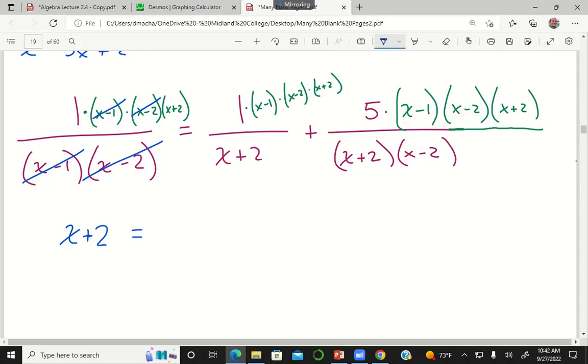The first term on the right-hand side has an x plus 2 in the numerator that will cancel with the x plus 2 in the denominator. And so the first term on the right-hand side now becomes x minus 1 times x minus 2. And then for the second term on the right-hand side x minus 2 in the numerator cancels with x minus 2 in the denominator. x plus 2 in the numerator cancels with x plus 2 in the denominator. And so that second term becomes 5 times x minus 1.